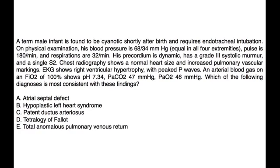Next is a term male infant is found to be cyanotic shortly after birth and requires endotracheal intubation. On physical exam, his blood pressure is 68 over 34. Pulse is 180. The respirations are 32. His precordium is dynamic. He has a grade 3 systolic murmur and a single S2. Chest x-ray is a normal heart size with increased pulmonary vascular markings. EKG shows right ventricular hypertrophy with peaked P waves. An ABG on an FiO2 of 100 shows pH of 7.34, PaCO2 of 47, and PaO2 of 46, which are the following diagnoses is most consistent with these findings.